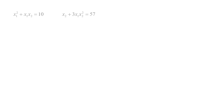Sometimes a set of two or more nonlinear algebraic equations need to be solved simultaneously in order to make predictions about a physical system. Here are two random nonlinear equations with unknowns x1 and x2. The first equation is x1 squared plus x1 times x2 equals 10. The second equation is x2 plus 3 times x1 times x2 squared equals 57. We bring all terms to the left side of the equations, which makes the right side of the equations equal to 0.